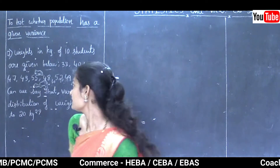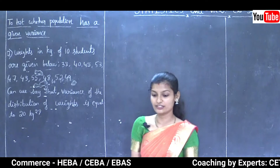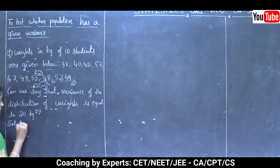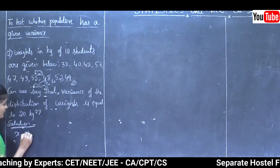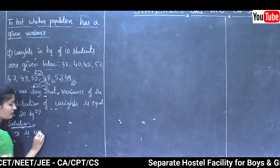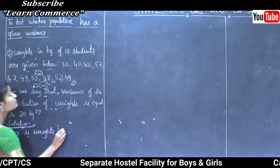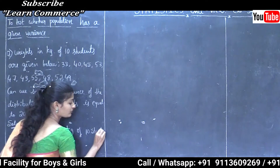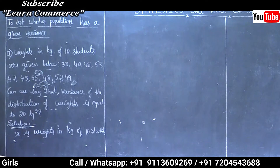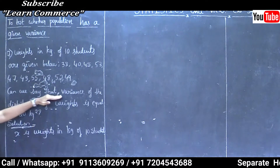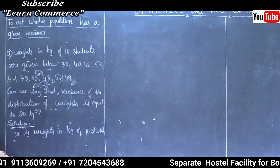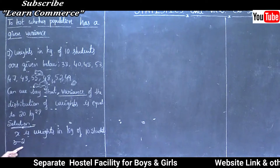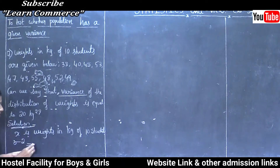Here the given observations are one set of x observations — weights in kg of 10 students. The question asks if variance equals 20 kg square, so sigma square is given as 20. That is the population variance.